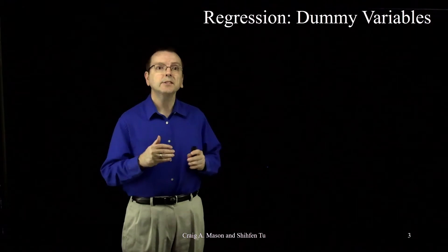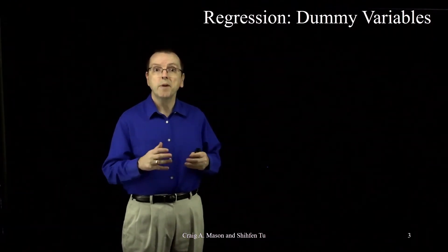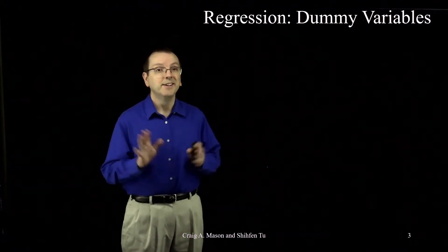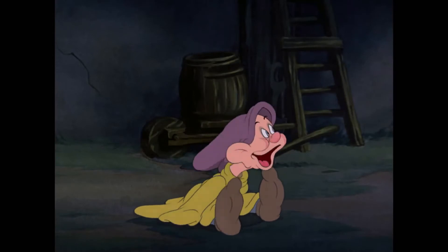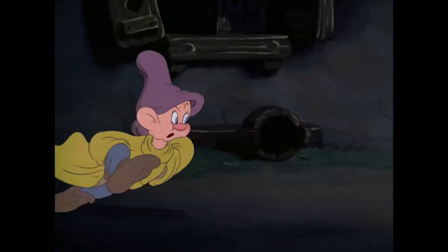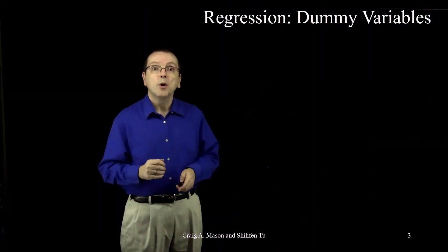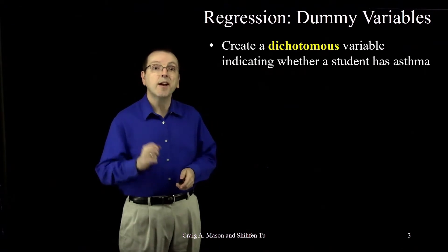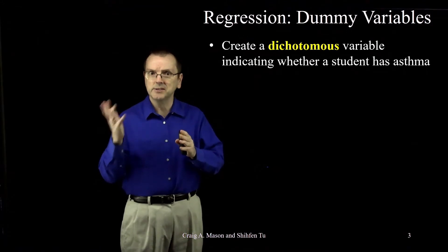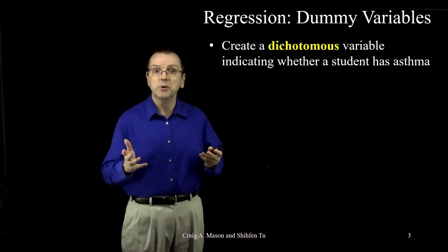To do that, let's start with an approach called dummy coding, in which we make dummy variables, also called dummy codes. Now it may have 'dummy' in the name, but there's nothing dopey about dummy coding. To code two groups using dummy coding, we create a dichotomous variable — a variable with two values, specifically a zero or a one, depending on which group a person is in.